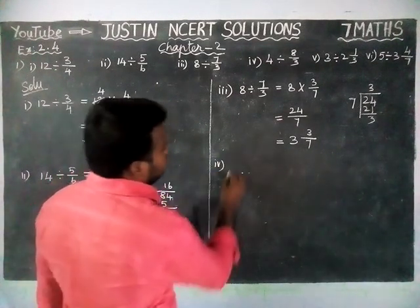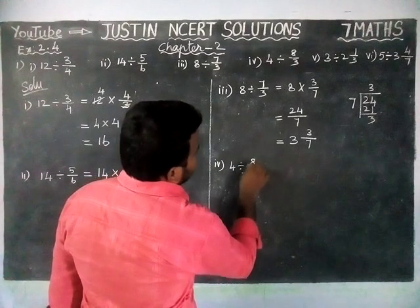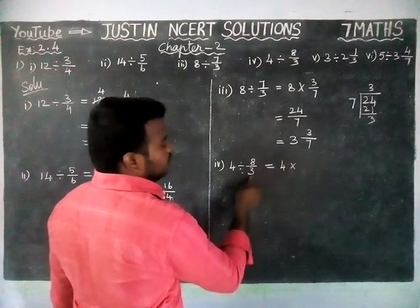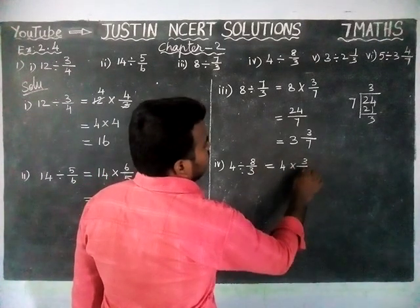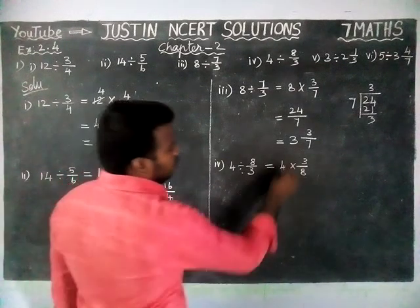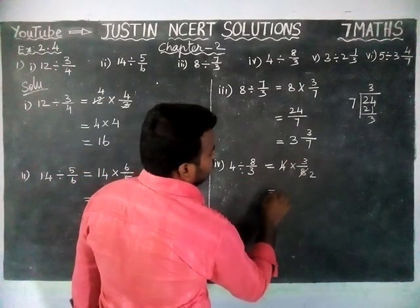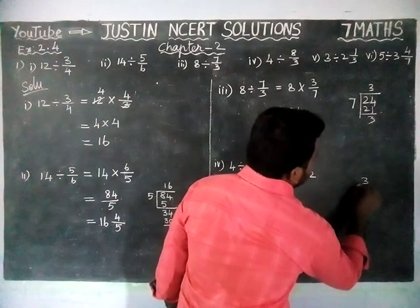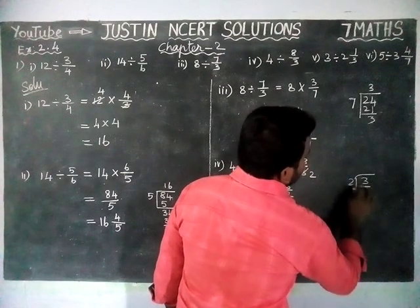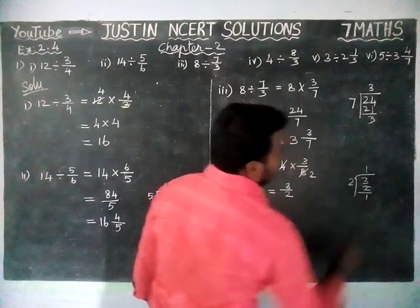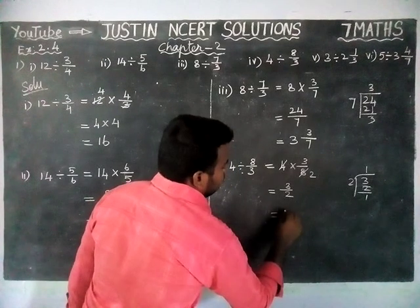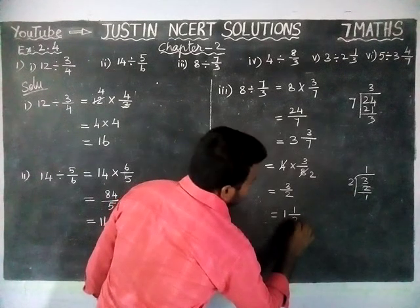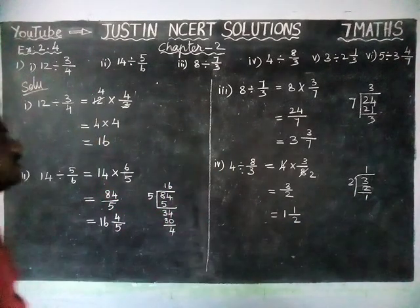Now fourth question: 4 divided by 8/3 is equal to. 4 multiplied by the reciprocal of 8/3, which is 3/8. And if it is possible, we can simplify. 4 and 8 simplify: 1 four is 4, 2 fours are 8. So we get 3/2. And since this is an improper fraction, we divide 3 by 2: 1 two is 2, remainder 1. So the answer is 1 and 1/2 for the fourth question.